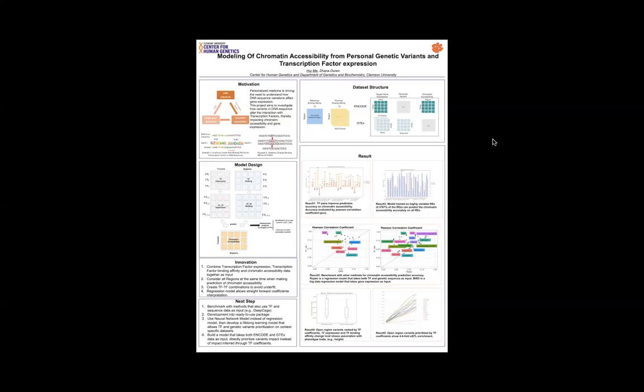So currently, the gap to be filled is that we have the ENCODE dataset, which applied a lot of different sequencing methods. It has the gene expression, the accessibility, but it does not give us any personal information. On the other hand, the GTEx project has the donors, each individual's information from the gene expression and the sequence, but we do not have the informative accessibility. So how to integrate the information from two datasets together.